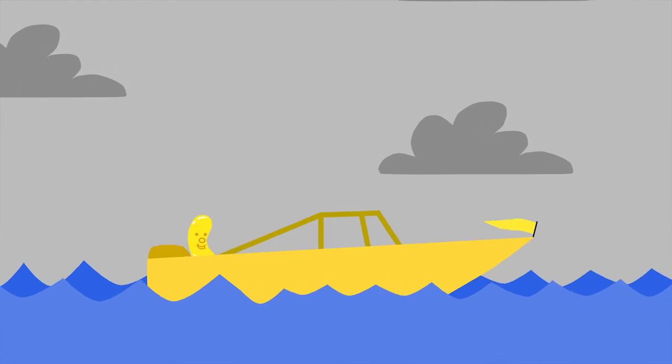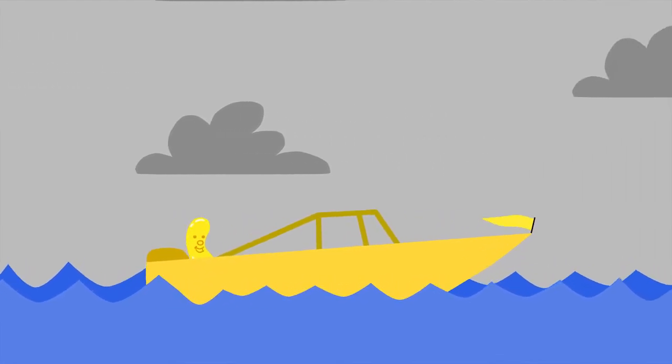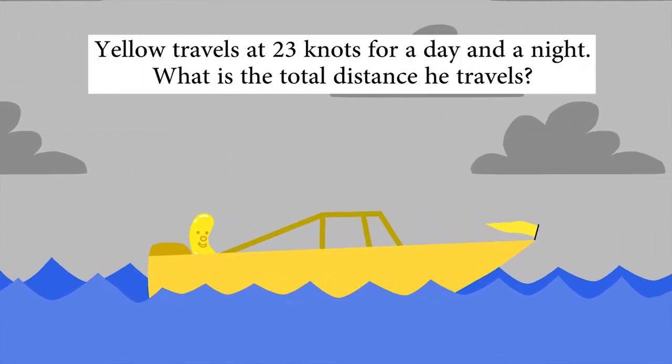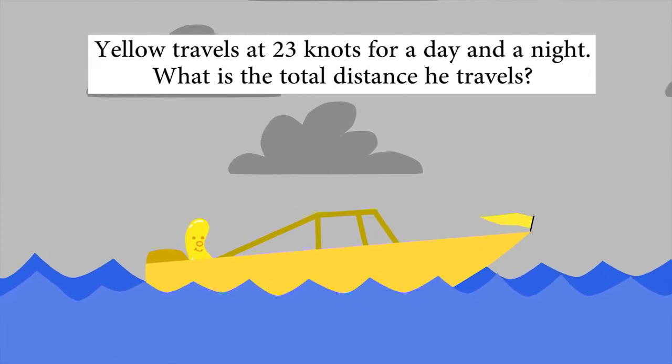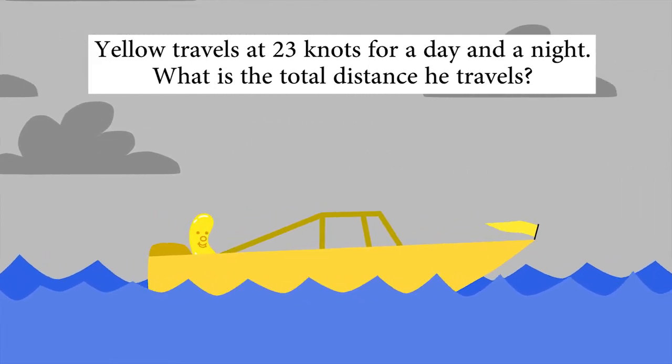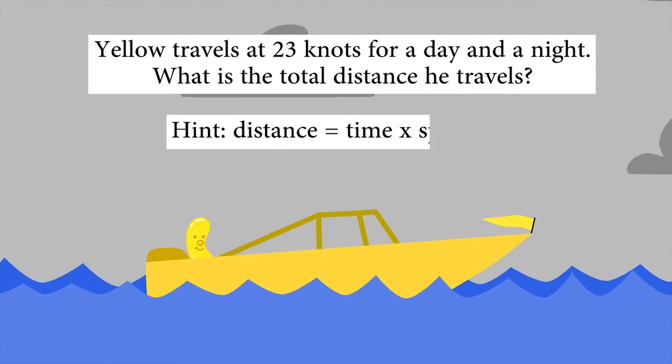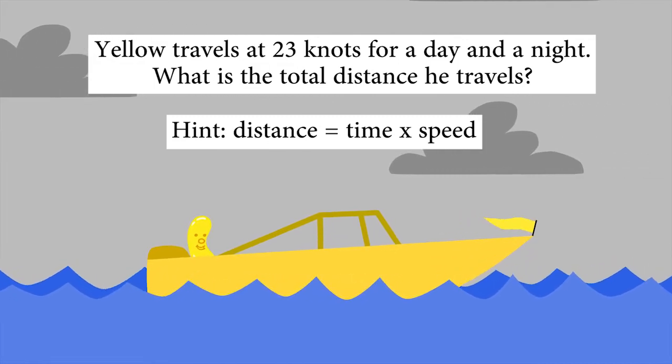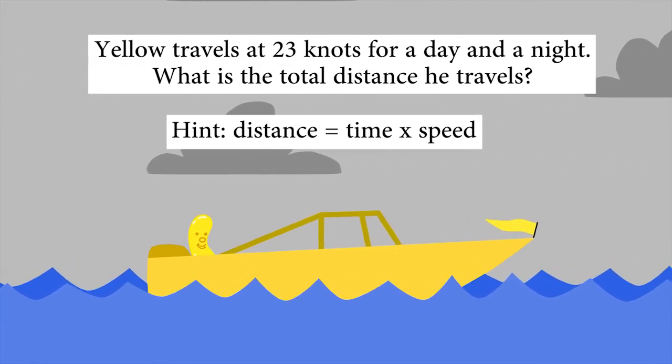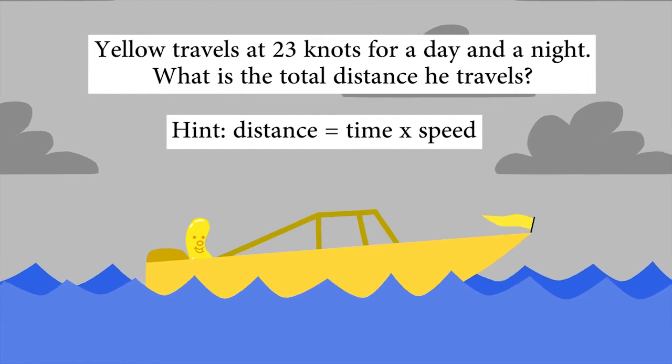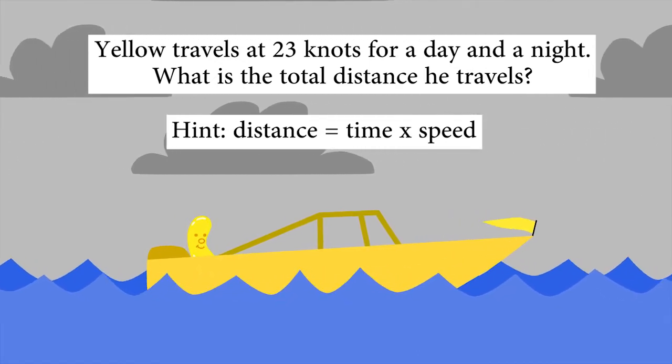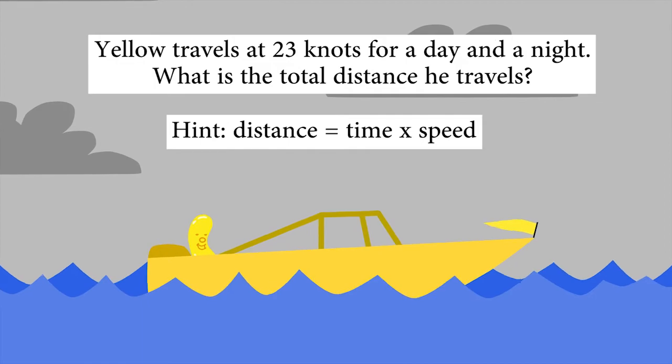I like going on long trips in my yellow speedboat. If I travel at 23 knots, how far can I go in a day and a night? I'll give you a hint. If you're stuck, you can use the formula. The distance I travel equals the length of time I spend travelling, multiplied by my speed.